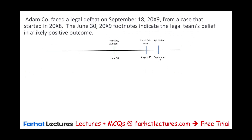Scenario 5: Adam faced a legal defeat on September 18th from a case that started in 20X8. The June 30th footnote indicated the legal team's belief in a likely positive outcome. As of June 30th and as of August 15th, we believed the outcome would be positive. Since we did not know until September 18th — after the financial statements were issued — nothing needs to be done. This is an event for the following year. The answer is Option 4: no action.